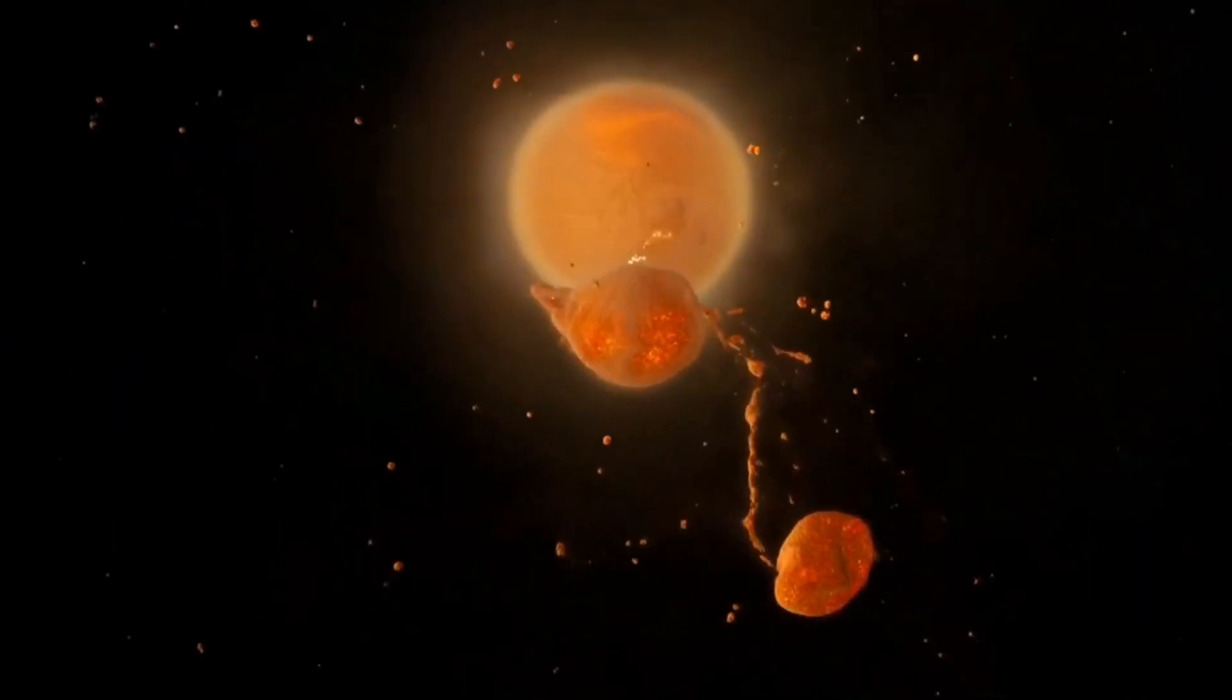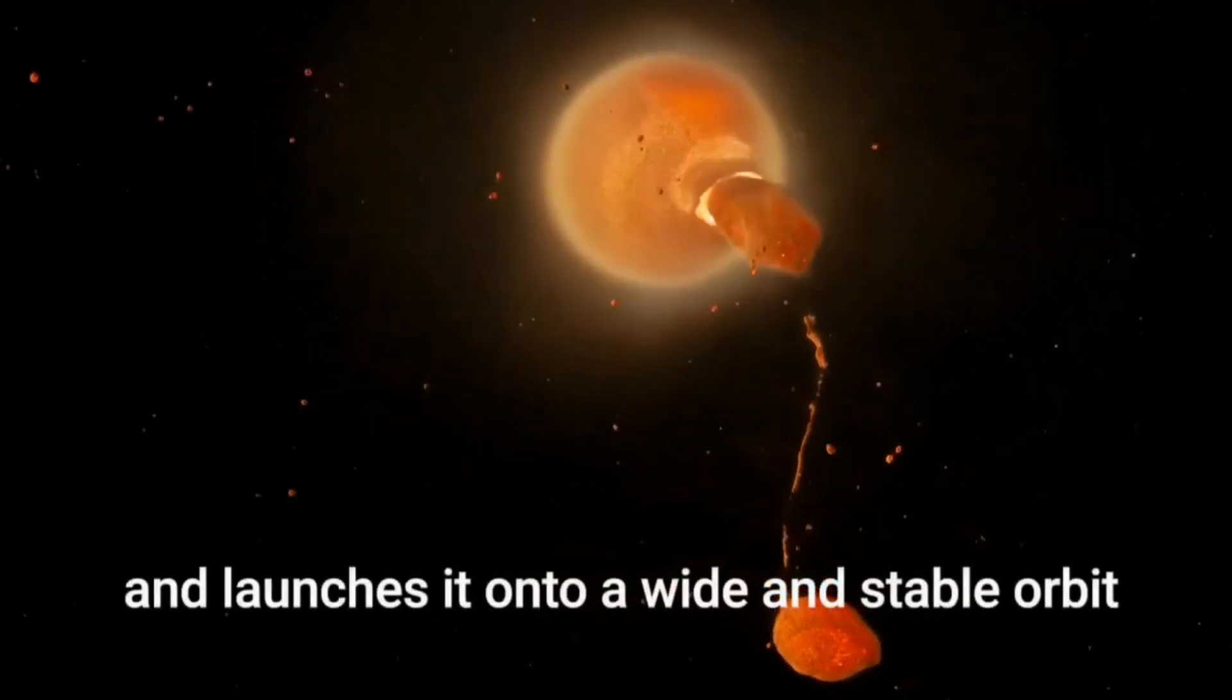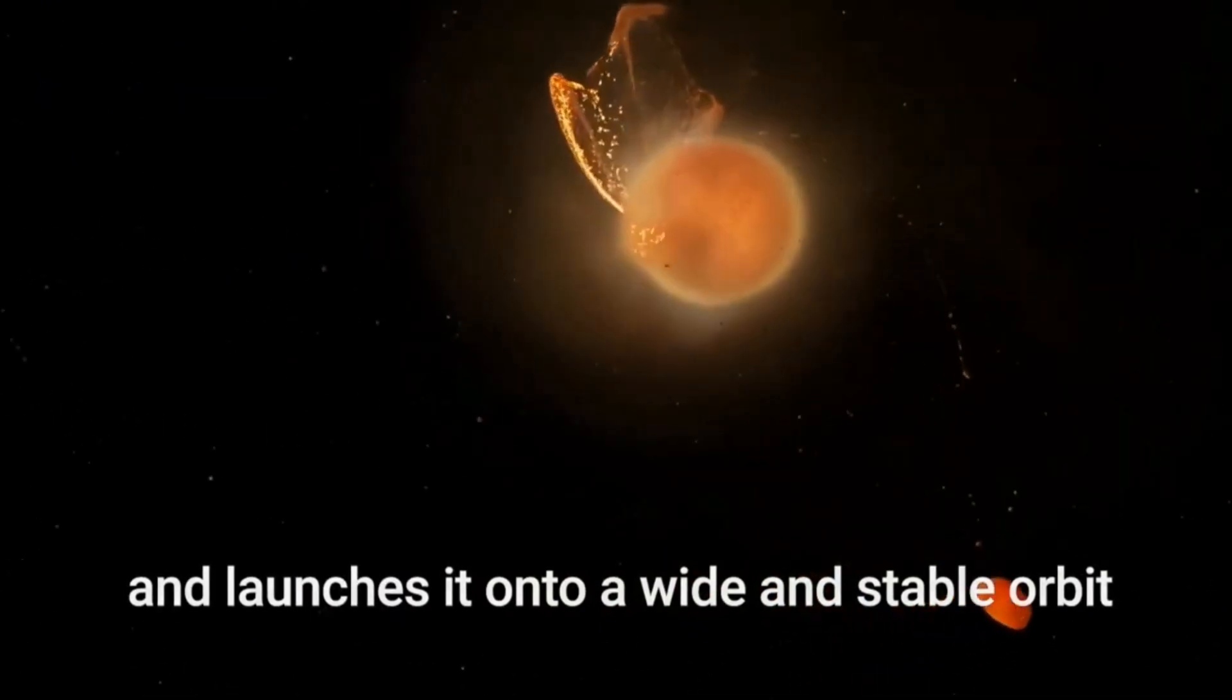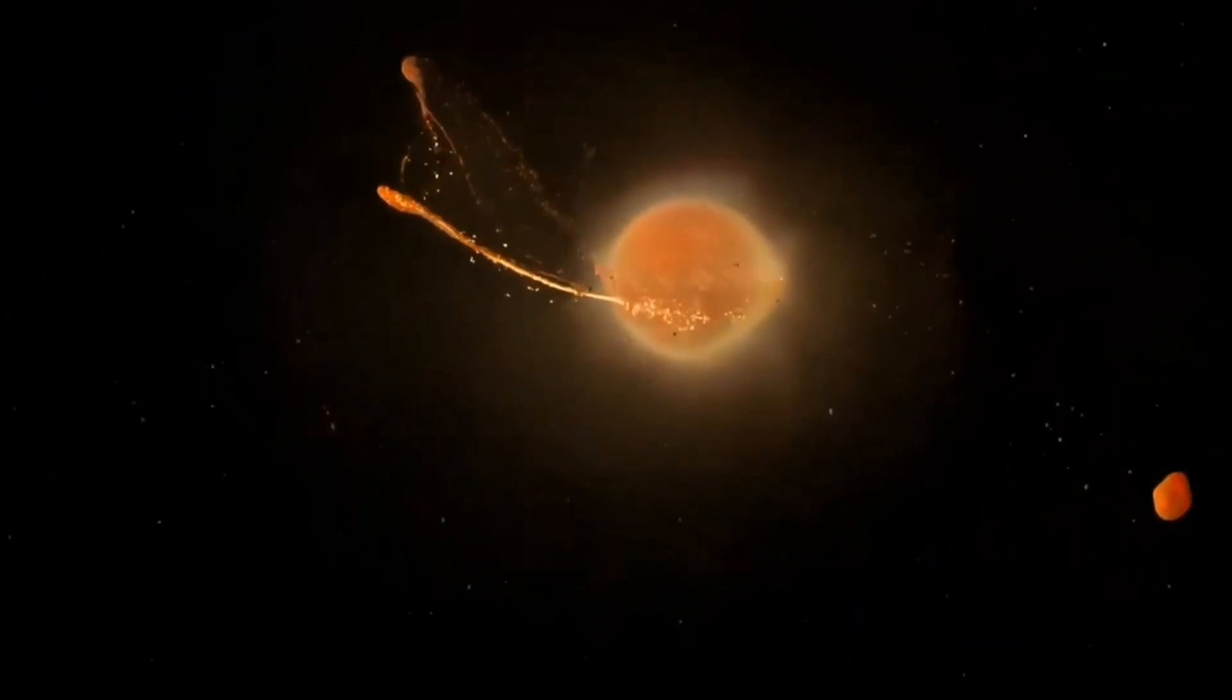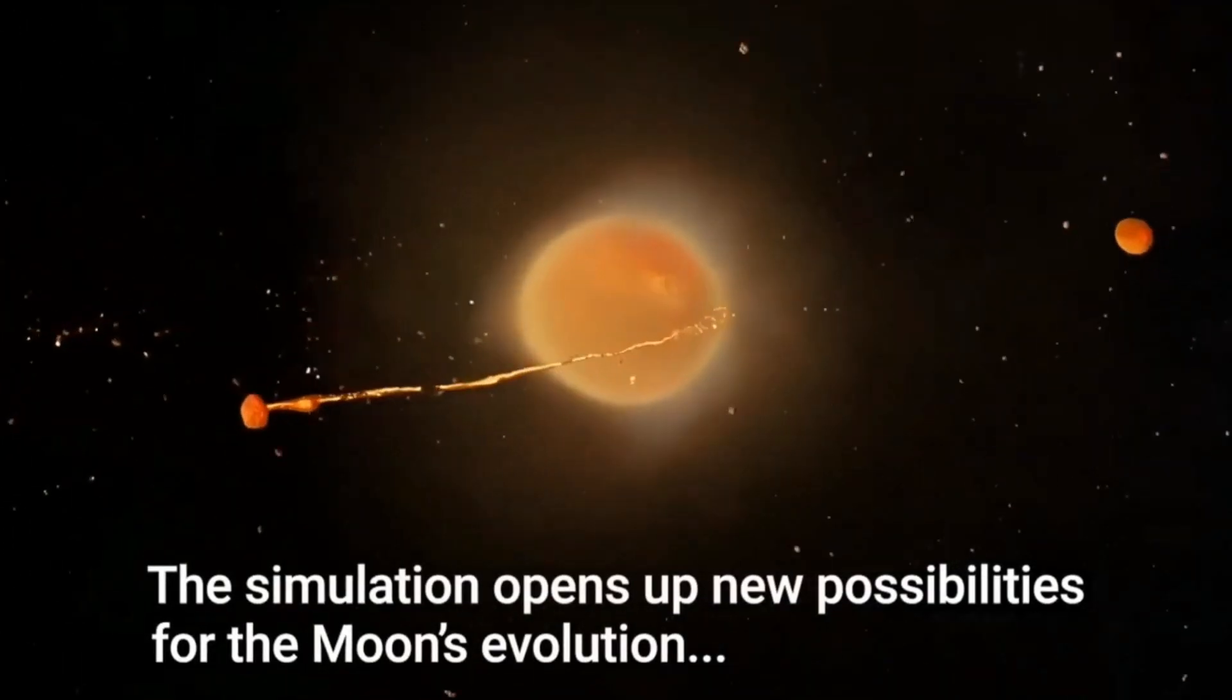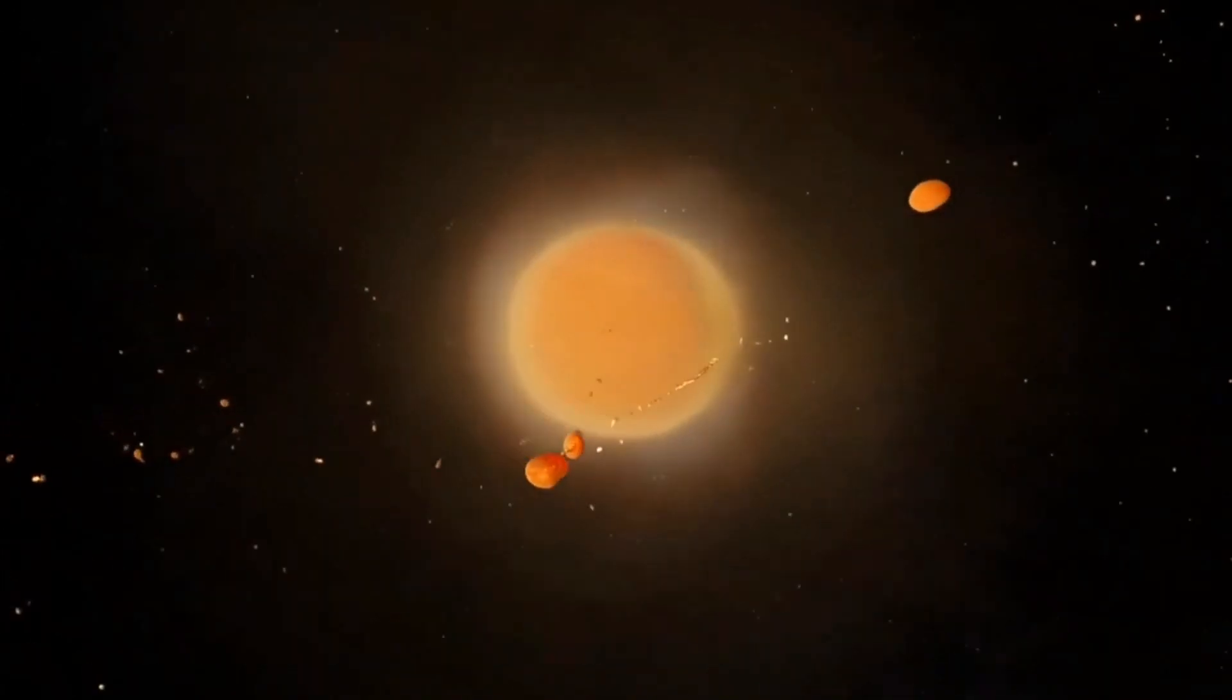It is generally believed that the moon was formed as a result of a large upheaval on the Earth that threw its material out. But why is the structure of the moon so similar to the structure of the Earth? There is confusion among scientists. The mystery has not yet been fully resolved.